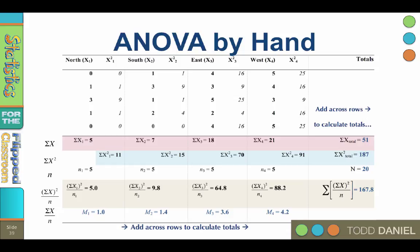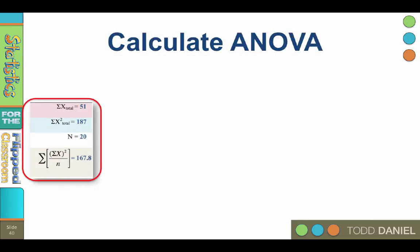Well, we are now ready to calculate the variance so that we can analyze it. Let's take each of these values in this furthest right column and bring them with us to the next slide so that we can use them in formulas to calculate the f-ratio. So there they are. We're going to use those in a moment.